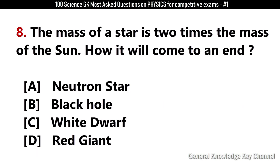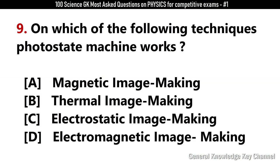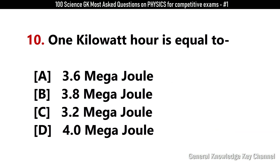The mass of a star is two times the mass of the sun. How will it come to an end? Answer A: Neutron star. On which of the following techniques does a photostat machine work? Answer C: Electrostatic image making. One kilowatt is equal to? Answer A: 3.6 megajoules.